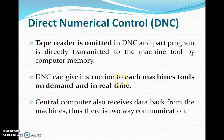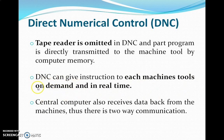In DNC, tape readers are completely omitted — there is no tape reader at all. Part programs are fed to the machine tool by the computer memory; they are stored in the computer's memory and fed to the machines by the computer. DNC can give instructions to each machine tool on demand and in real time, meaning if a machine is in an idle condition, a task can be assigned to it immediately.